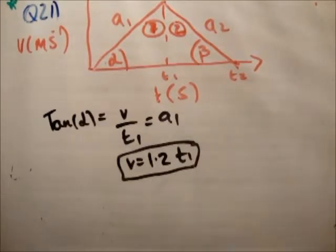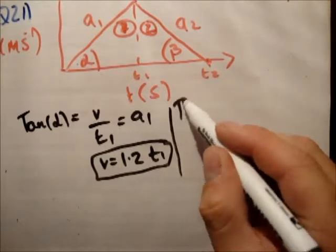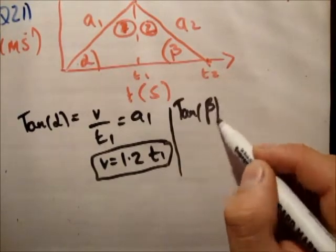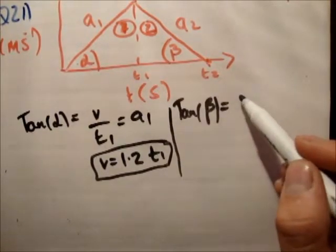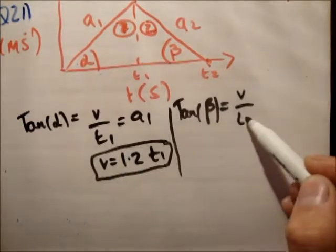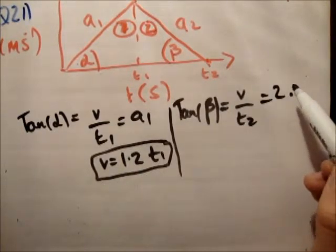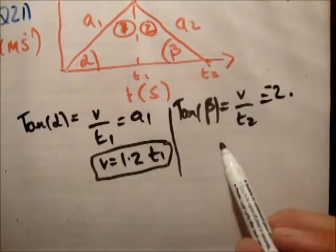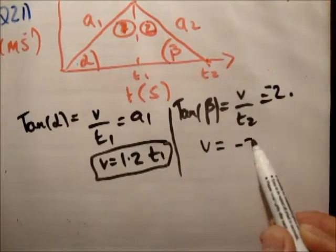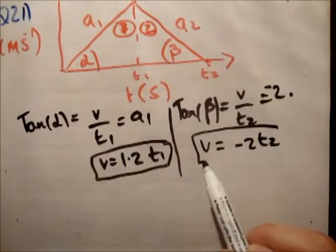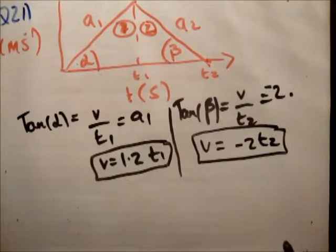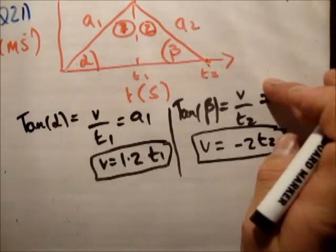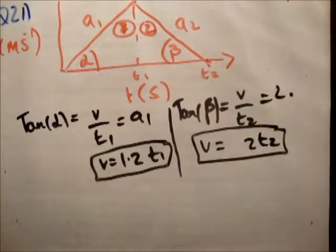And we know that tan beta is equal to the opposite over adjacent. So that's V over T2 is equal to 2. It's actually equal to minus 2, we'll say. So, what we'll say is that V is equal to minus 2 times T2. No, it's not equal to minus 2 because we're talking about lengths. So we can leave that there at positive 2. It's a length of 2.